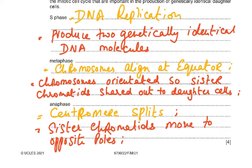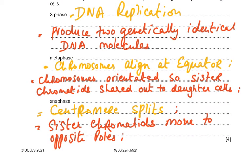In metaphase, chromosomes align at the equator. The chromosomes are oriented so that sister chromatids will be shared out to daughter cells, because then they will be pulled apart and move to the poles. In anaphase — I always say 'apart' or 'alag' — the centromere splits and the sister chromatids move to the opposite poles.